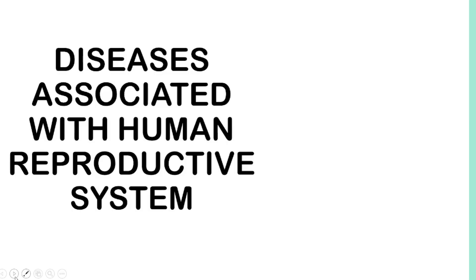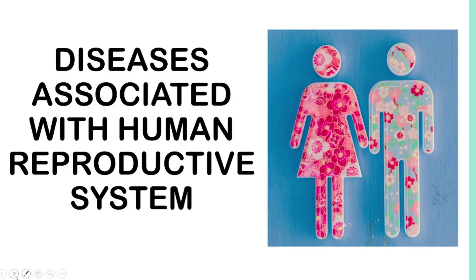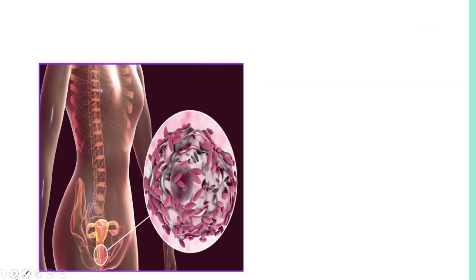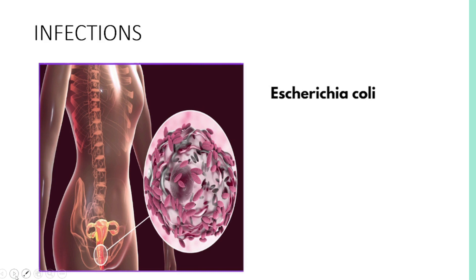Today's lesson is all about diseases associated with the Human Reproductive System. Let's discuss infections. Infections are the most common problems associated with the reproductive system in adults.